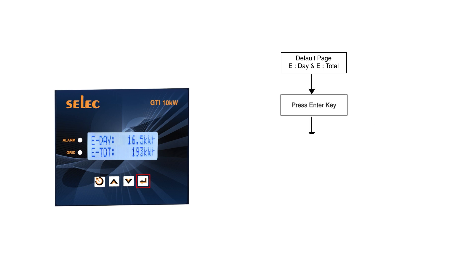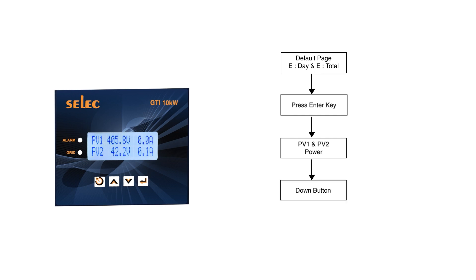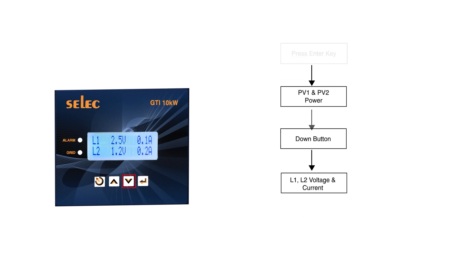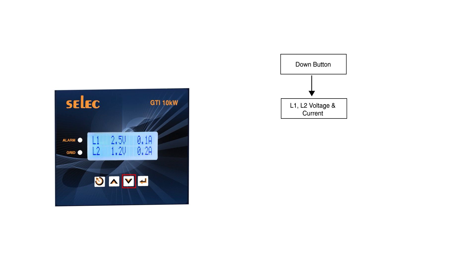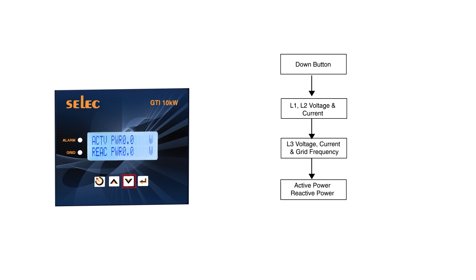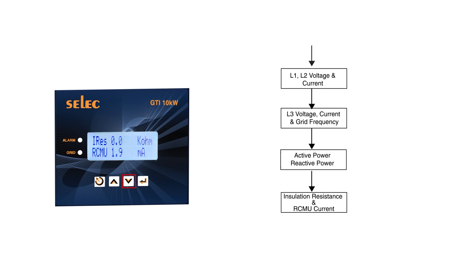To see the parameters, press the Enter key, which shows PV1 power and PV2 power. By pressing the Down key, you can see Line 1 and Line 2 voltage and current. Pressing Down again shows Line 3 voltage and current, as well as grid frequency. Pressing Down again shows active power and reactive power.